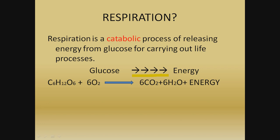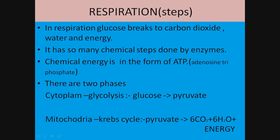In respiration, glucose breaks down into carbon dioxide, water, and energy through many chemical steps carried out by enzymes. Chemical energy is produced in the form of ATP — adenosine triphosphate — and some energy is also released in the form of heat.